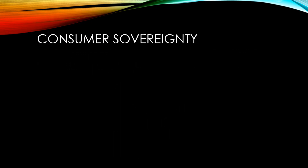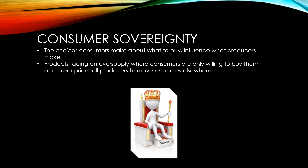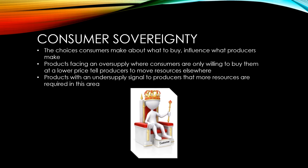While ultimately producers decide what they're going to produce, consumer sovereignty is the idea that through the choices consumers make about what to buy, they influence what producers will make. Products facing a situation of oversupply mean that consumers are only willing to buy them at a lower price, which tells producers to move resources elsewhere. Products with an undersupply signal to producers that more resources are required in this area.